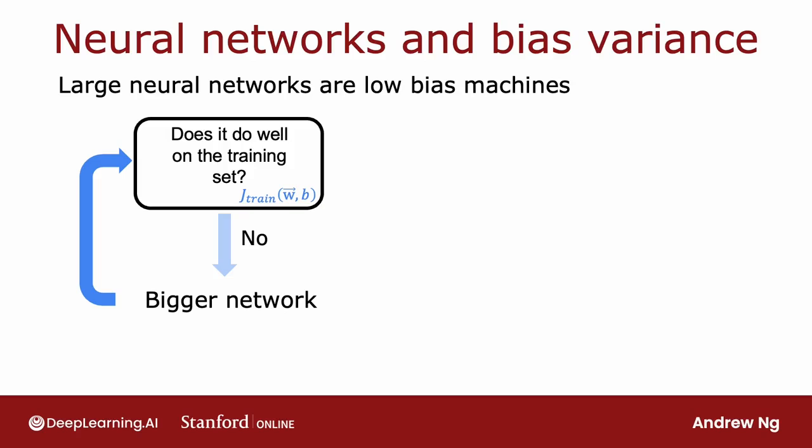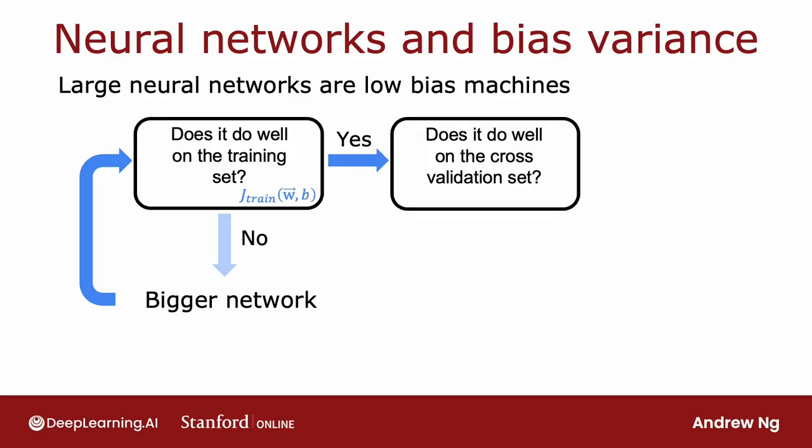After it does well on the training set, so the answer to that question is yes. You would then ask, does it do well on the cross validation set? In other words, does it have high variance? And if the answer is no, then you can conclude that the algorithm has high variance because it does well on the training set, does not do well on the cross validation set. So that big gap in J_CV and J_train indicates you probably have a high variance problem.